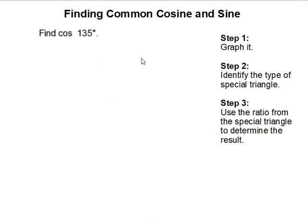Finding common cosine and sine. In this problem we are going to find the result in relation to the 45-45-90 triangle or the 30-60-90 triangle. So let's start with finding the cosine of 135 degrees.